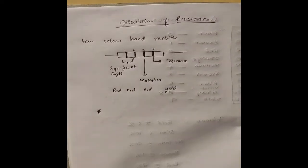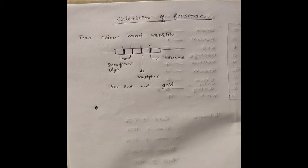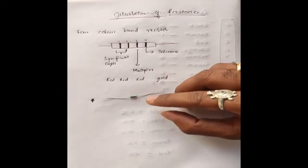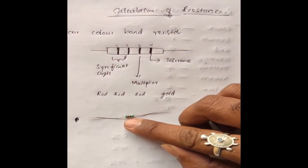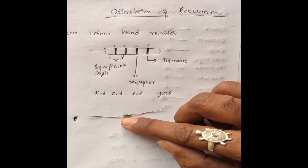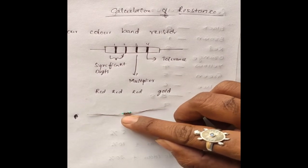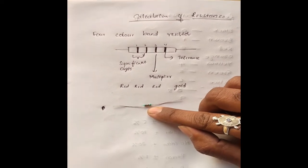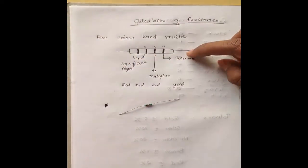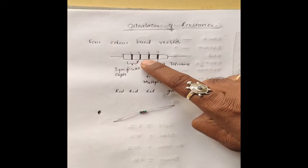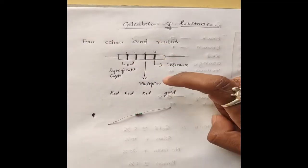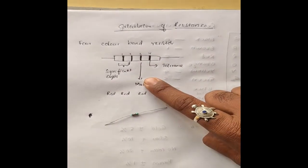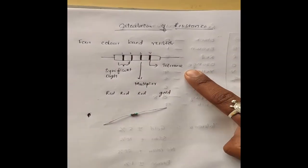Now we are going to calculate a four color band resistor. Here we have a four color band resistor whose colors are red, red, red, and gold. For a four color band resistor, bands one and two indicate the significant digits, the third is the multiplier, and the fourth is the tolerance.